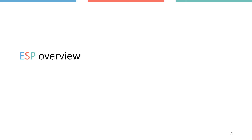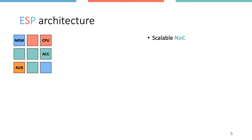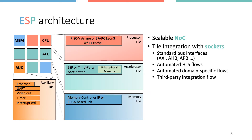Let me give a brief overview of ESP. The architecture is based on a network-on-chip for scalability. Users can select the size of the NoC mesh and define each tile as a processor tile, accelerator tile, memory tile, or auxiliary tile. The auxiliary tile integrates shared peripherals such as UART, Ethernet, and the interrupt controller. Each memory tile implements the necessary I/O to access memory, offering an independent channel to external memory — either a DDR link or an FPGA-based link if DDR controller is unavailable.